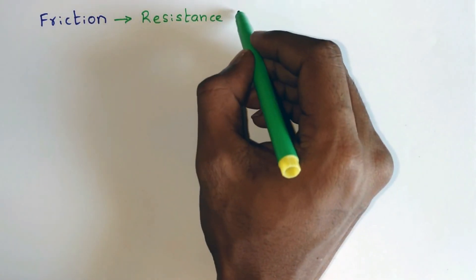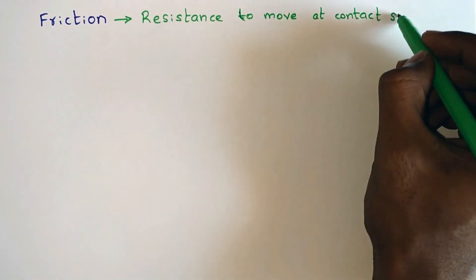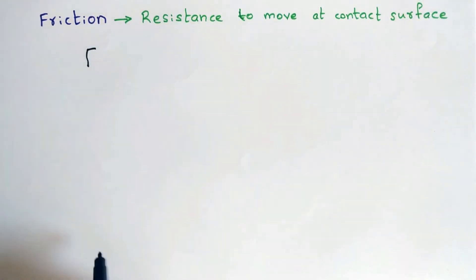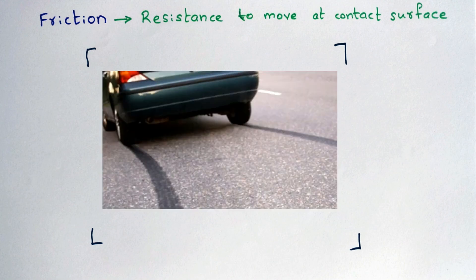Friction is the opposing force to the motion of a body which acts at the contact surface. Frictional force has its own advantages and disadvantages. It helps us in walking, holding an object or stopping a car.